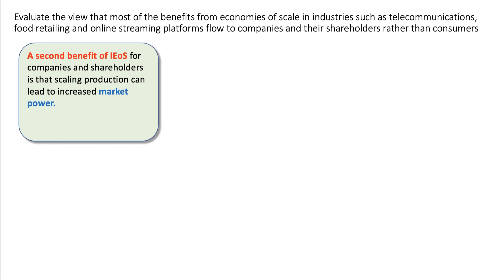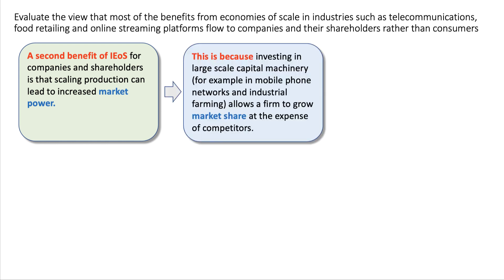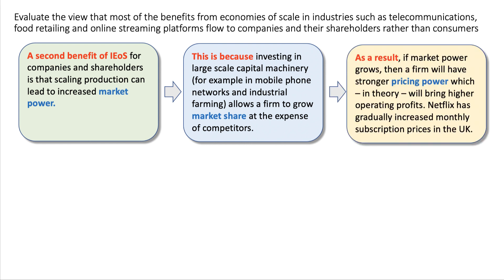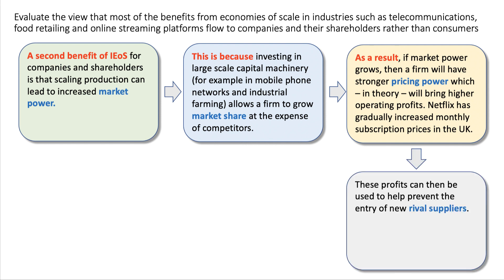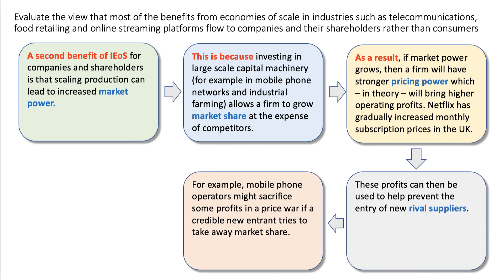My second KAA point — and this is good exam technique, make it really clear — a second benefit of an internal scale economy for companies and shareholders is that scaling production can increase their market power. This is because investing in machinery — for example, mobile phone networks, industrial farming — allows a firm to grow market share at the expense of competitors. More market share gives them more pricing power, which in theory brings higher profits. Netflix has used this market power to gradually increase their monthly subscription prices in the UK and other countries. These profits can then be used to prevent the entry of new rival suppliers — for example, a mobile phone operator might sacrifice some profits in a price war if a new entrant tries to take away market share.